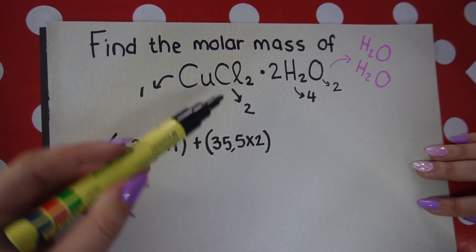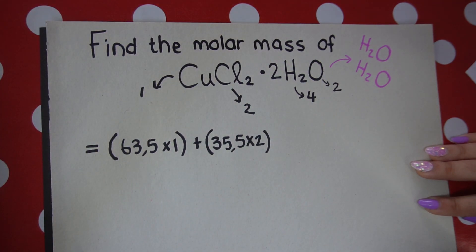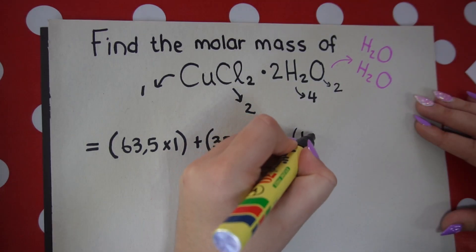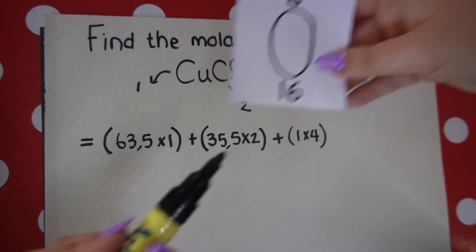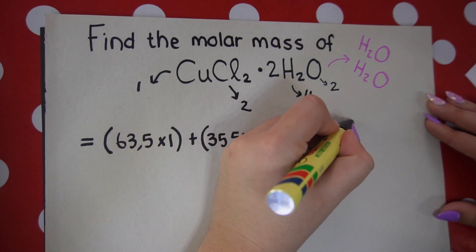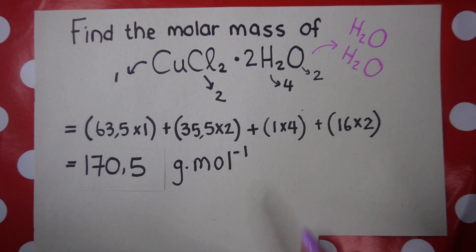So remember that dot does not mean multiply. We are simply going to just carry on adding the mass of this. And we get 170.5 grams per mole.